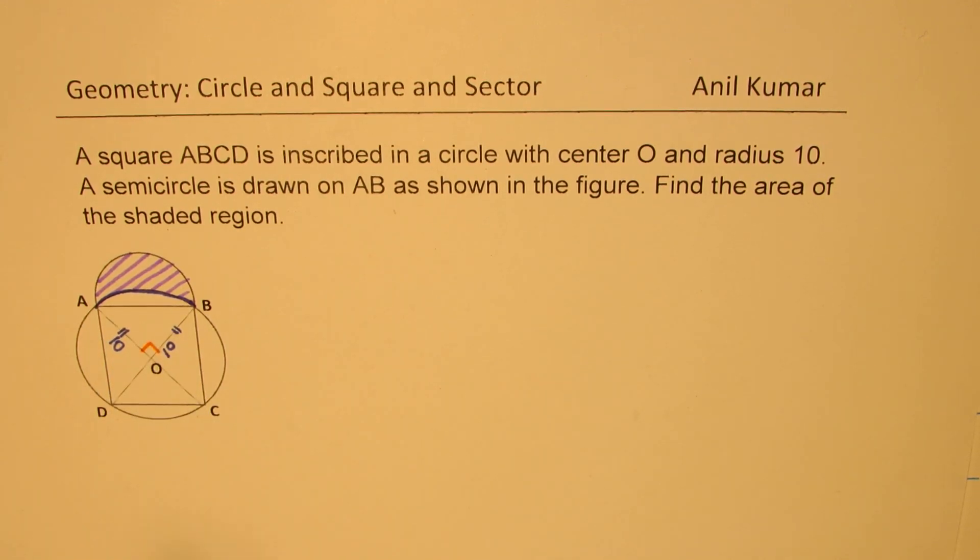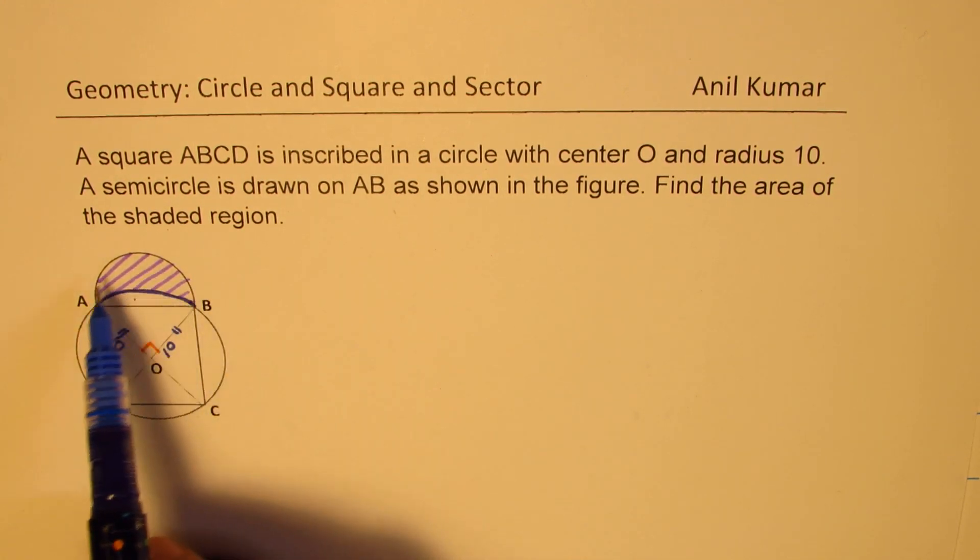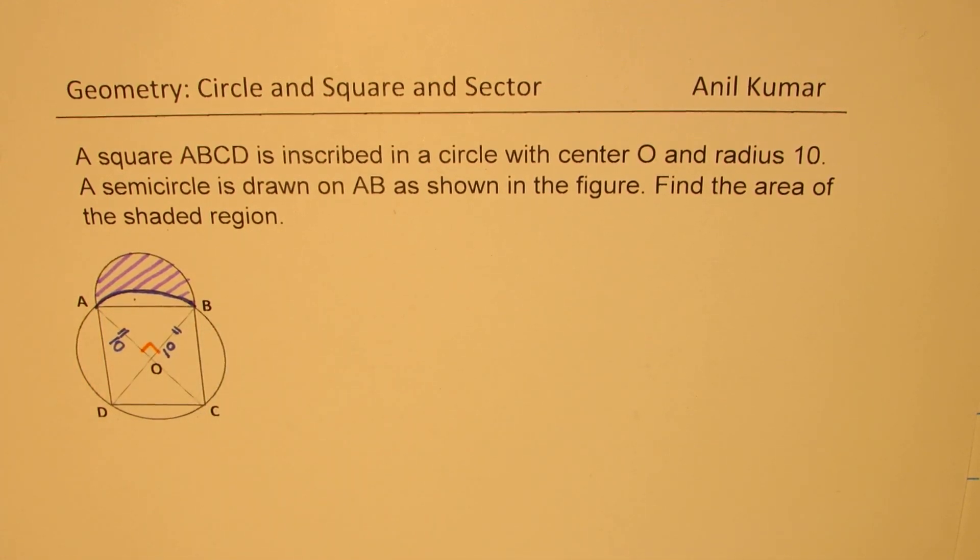So the strategy here will be to find area of the chord, and then semicircle minus chord gives us the answer, correct?